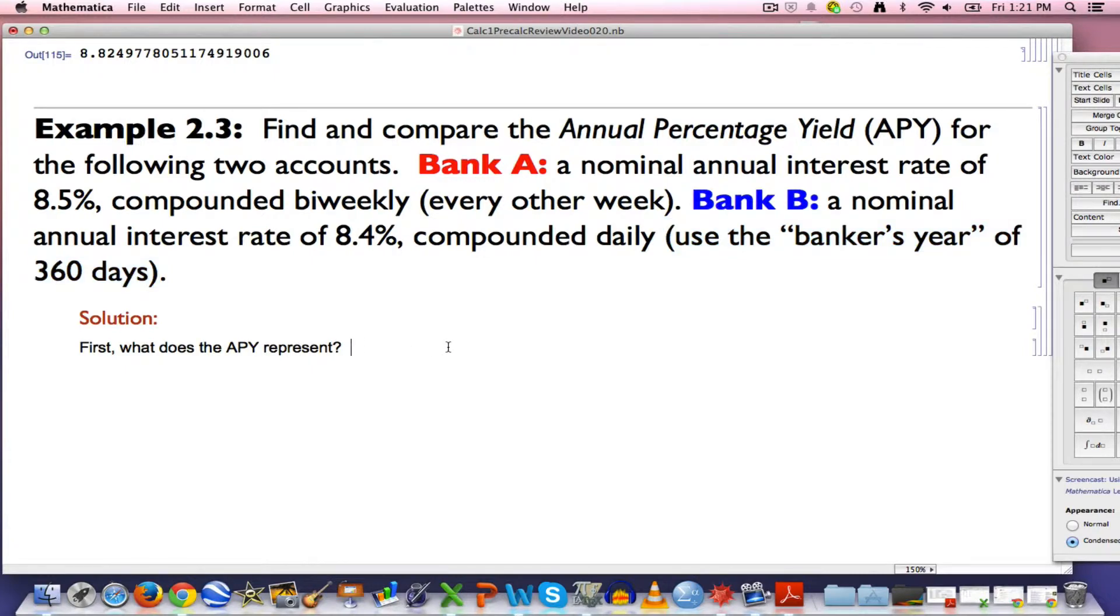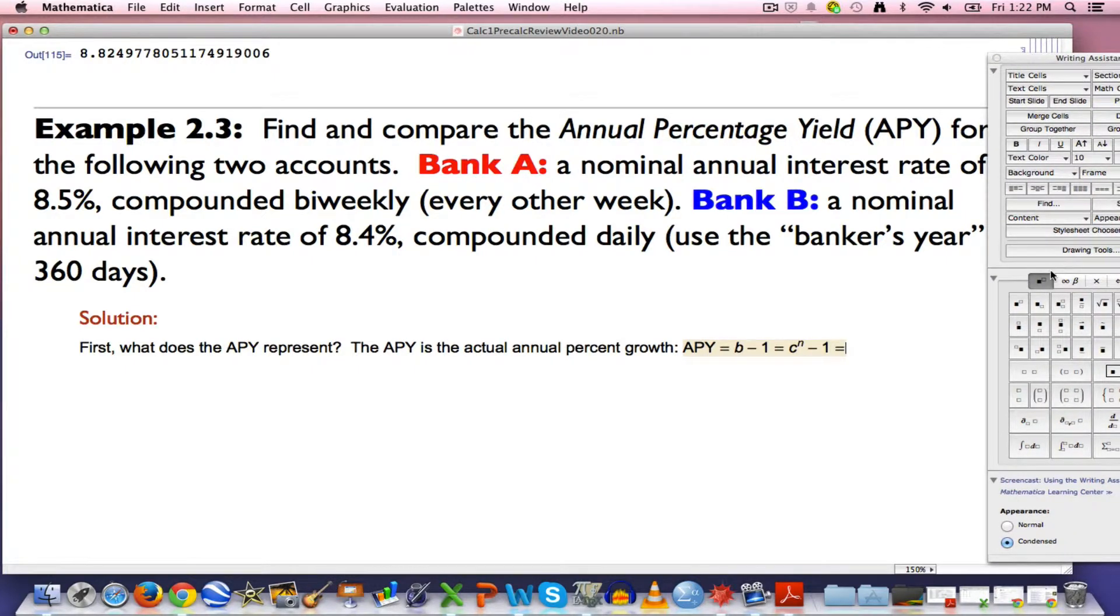To answer this question, we have to recall what the APY represents. The APY is the actual annual percent growth. It's related to B from the last video, the growth factor. It's the thing you multiply your balance by at any given time to find the balance after one year. By subtracting 1 from that, you get the APY. So the APY could be thought of as B minus 1. But what was B equal to? B is 1 plus R over n to the n power. I've got to subtract 1 from that now to find the APY.